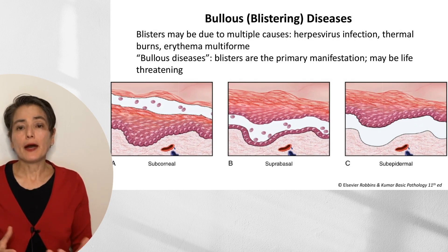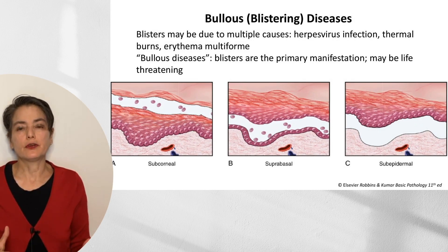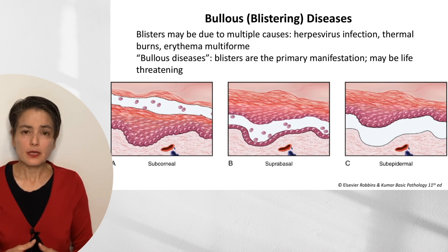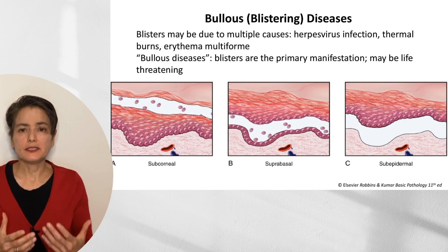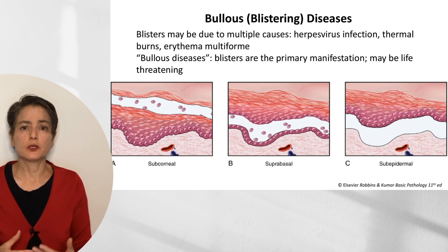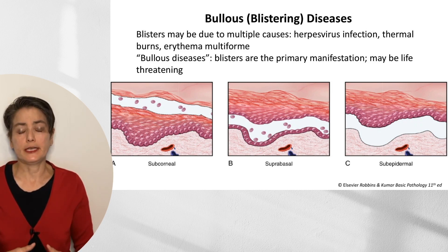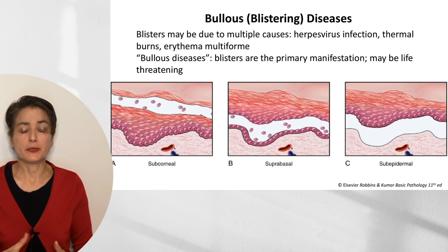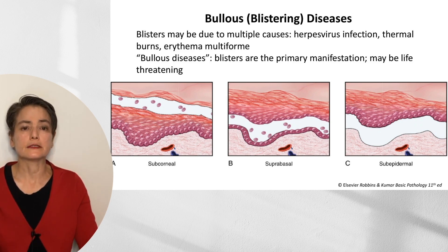When we think about blisters, you can see them in a variety of different disease states: herpes virus infection, thermal burns, erythema multiforme, trauma, poison ivy. But when we talk about the bullous diseases, we're referring to diseases in which blisters are the primary manifestation and they may be life-threatening. This video is focusing just on the inflammatory bullous diseases, because there are also non-inflammatory hereditary blistering diseases.